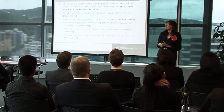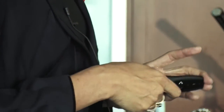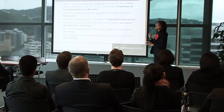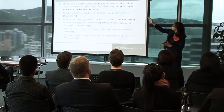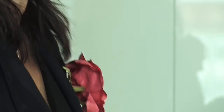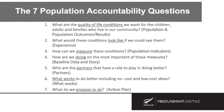Sometimes we're conditioned to think we can't do something if we don't have the funding. But in RBA, what we say is there are a lot of no-cost, low-cost ideas that can make a considerable difference. We encourage, as part of the seven questions, really considering what those no-cost, low-cost ideas might be. And last but not least, number seven is: what do we propose to do? This is where we create the action plan associated with the means.